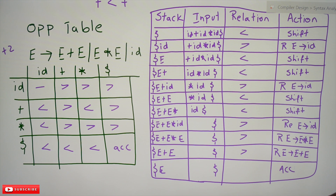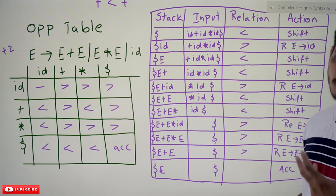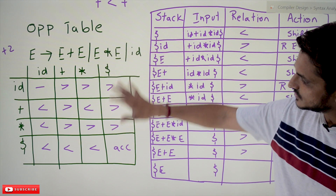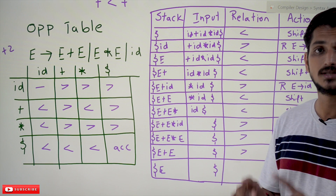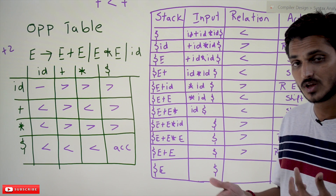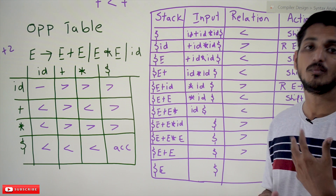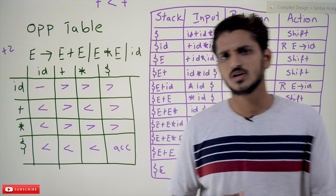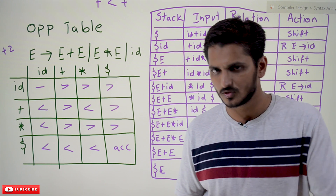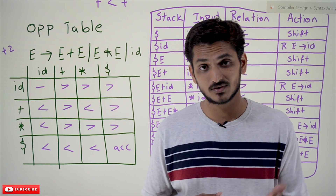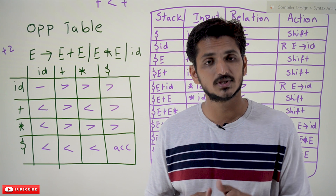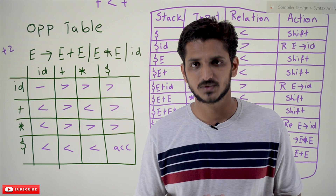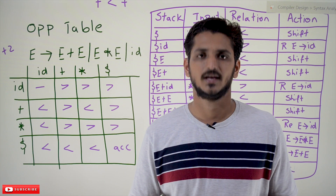This is how operator precedence parsing works. In this example we did not use the equal-to relation — in the next class we will do a more complex example where you will get clarity about that. Hope you understood the concept. If you have questions, please post them in the comment section below. Thanks for watching — if you haven't subscribed, please subscribe and press the bell icon for the latest updates.